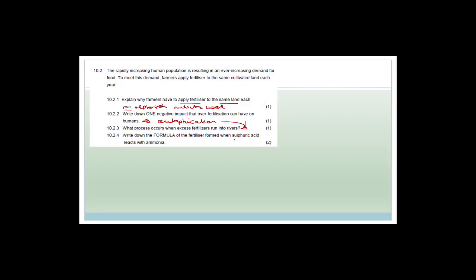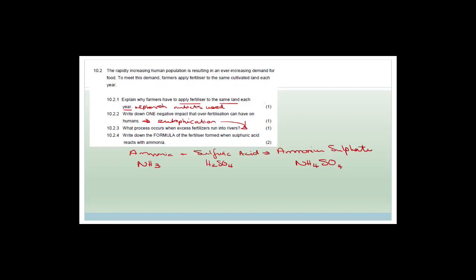Write down the formula of a fertilizer formed when sulfuric acid reacts with ammonia. Ammonia plus sulfuric acid gives you ammonium sulfate. Ammonia is NH₃, sulfuric acid is H₂SO₄, and the product — ammonium sulfate — has the formula (NH₄)₂SO₄. We're not asking for a balanced reaction, just the formula.